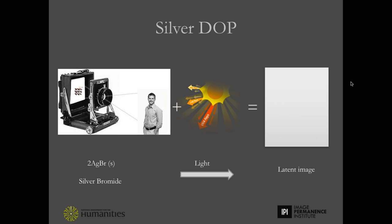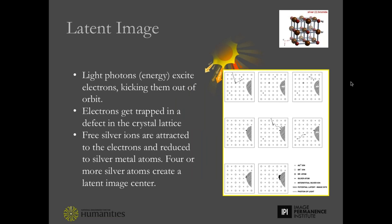What exactly is happening when the latent image is formed during development? Silver halide chemistry is what's called an oxidation-reduction reaction. The structure of an atom includes protons, neutrons, and electrons. The nucleus is made up of protons and neutrons and they're locked down. The nucleus is surrounded by electrons, and electrons can move about — they have a negative charge. An oxidation-reduction reaction has to do with the movement of electrons. If an atom loses an electron, it's oxidized; if it gains an electron, it's reduced. We can remember it by saying 'LEO says GER' — lose electron oxidized, gain electron reduced.